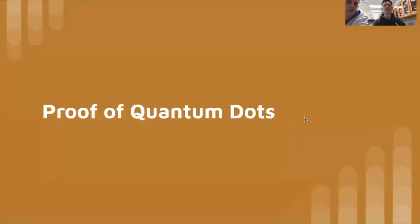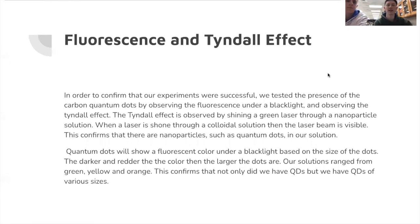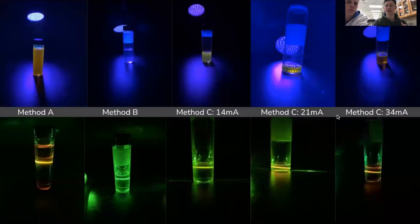We had two different methods to prove that our quantum dots exist, and we tested the fluorescence and the Tyndall effect. Quantum dots, due to their optical nature, fluoresce, and so under a black light you can see that fluorescence to make sure that they are quantum dots. The Tyndall effect is when you shine a laser through a solution, and if it's a colloidal solution the beam is visible because it's bouncing off of those nanoparticles. Here in our next slide you can see on the top row the fluorescence of each different method, and on the bottom row you can see the Tyndall effect where that beam is bouncing off all the nanoparticles.